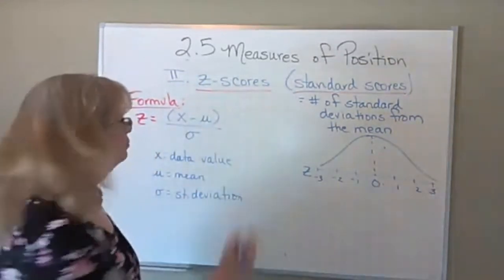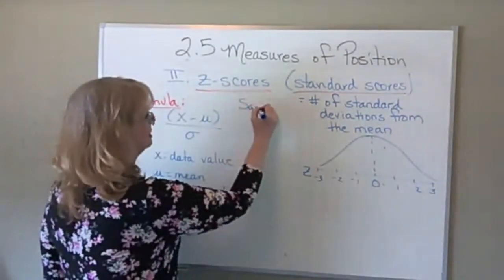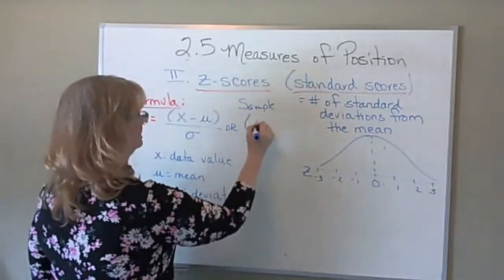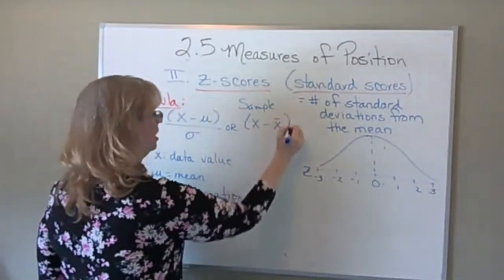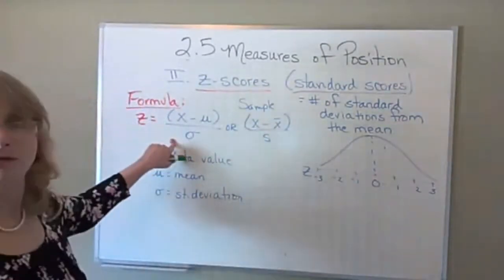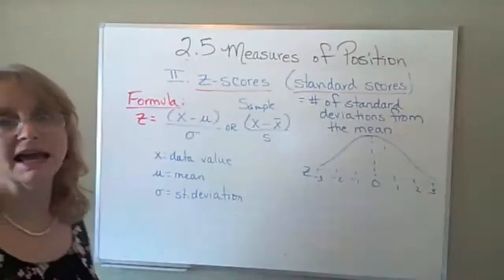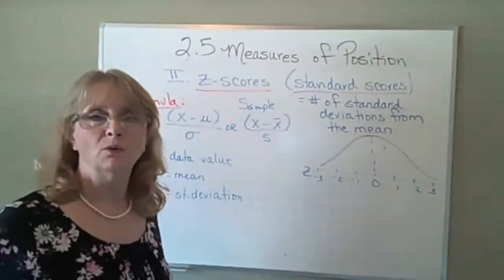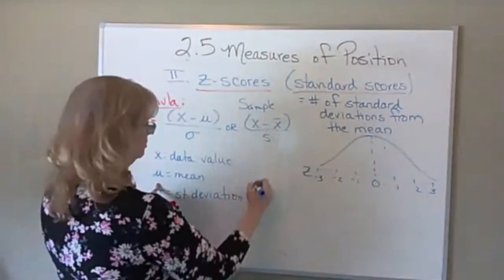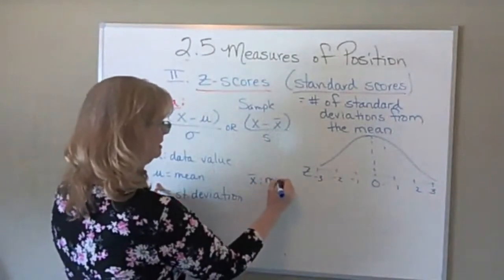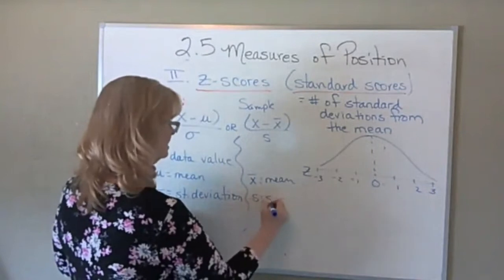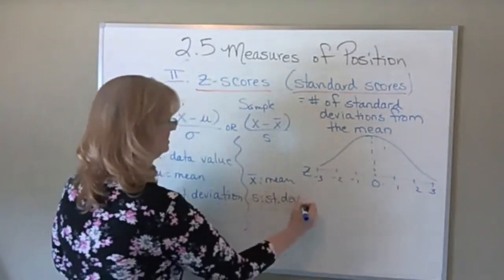The formula for finding the z-score for a population is z = (x − μ) / σ, where x is the data value, μ is the mean, and σ is the standard deviation. For a sample, the formula is the same but with different symbols: z = (x − x̄) / s, where x̄ is the sample mean and s is the sample standard deviation.